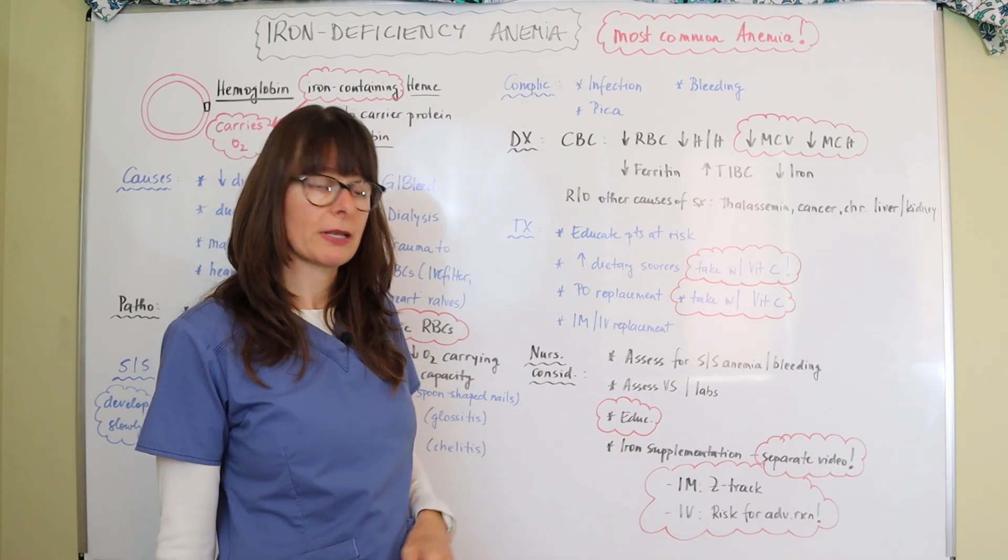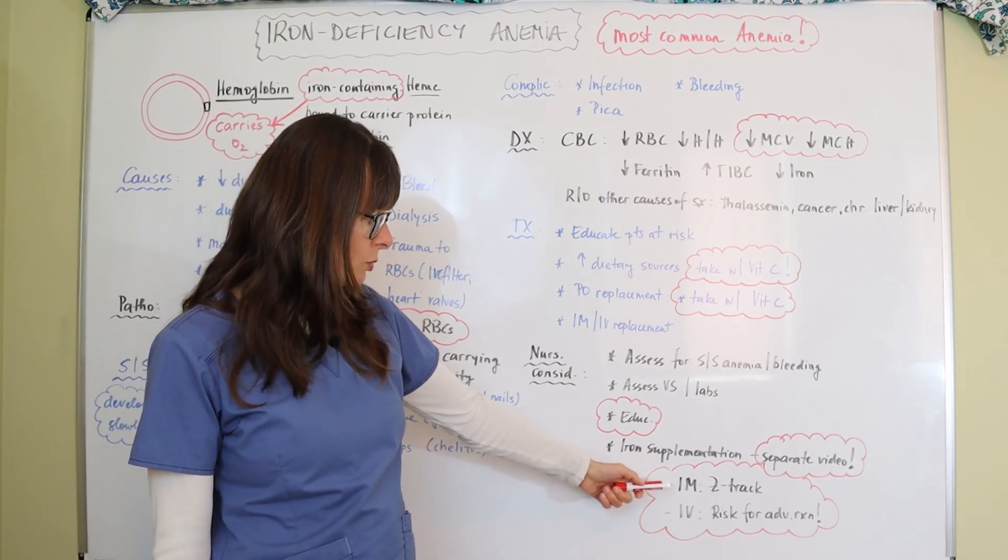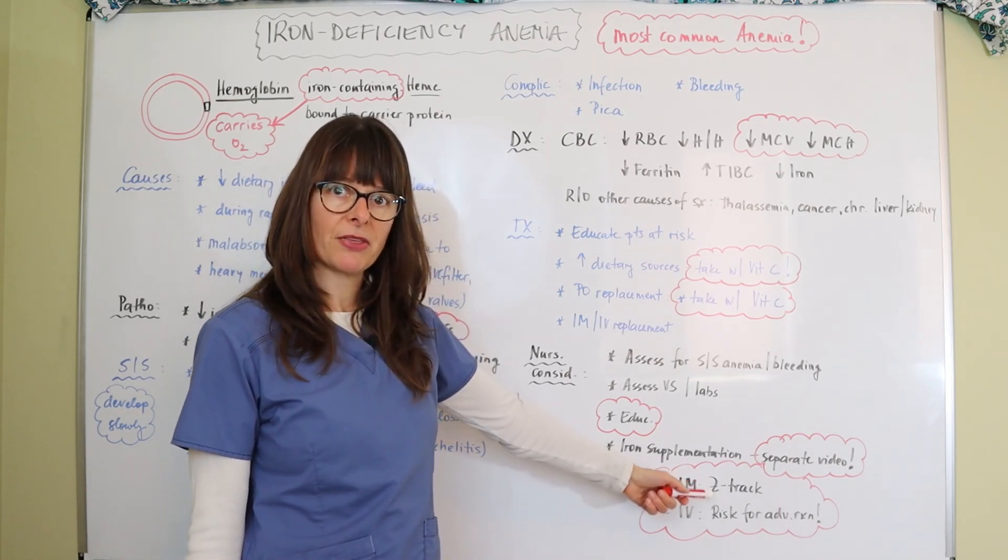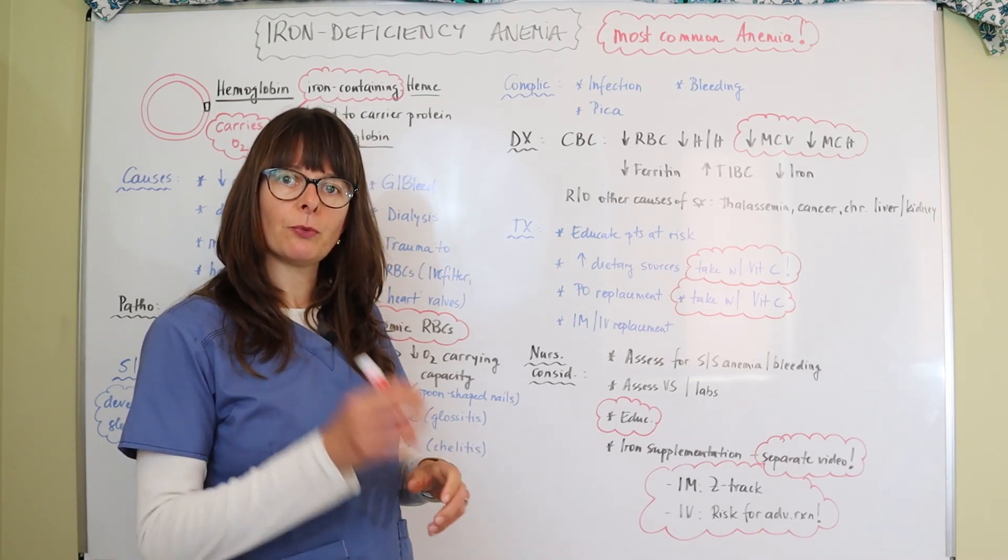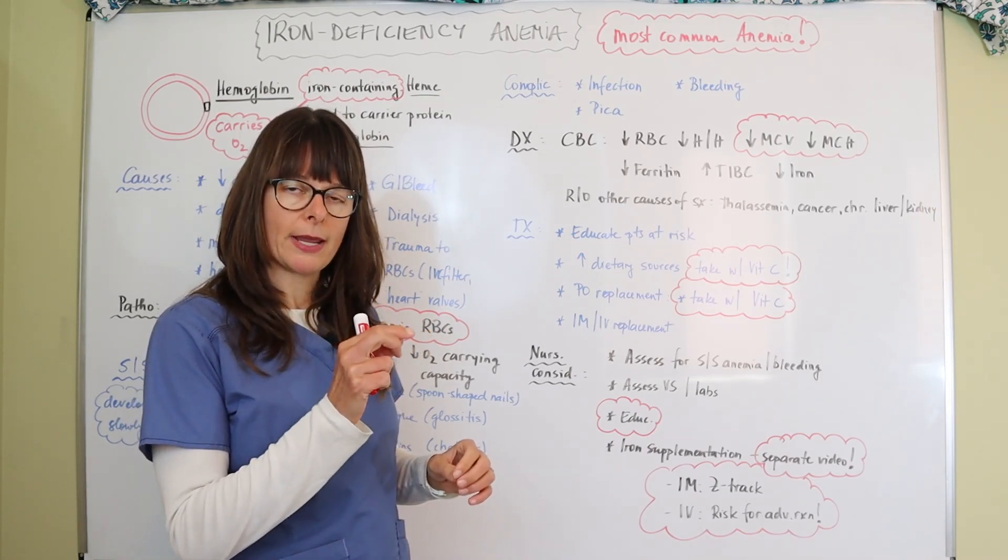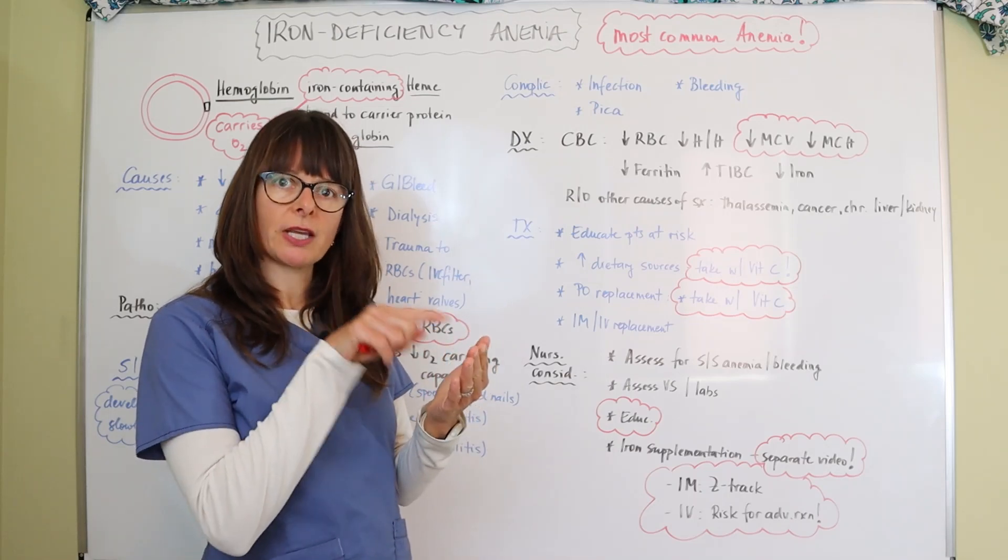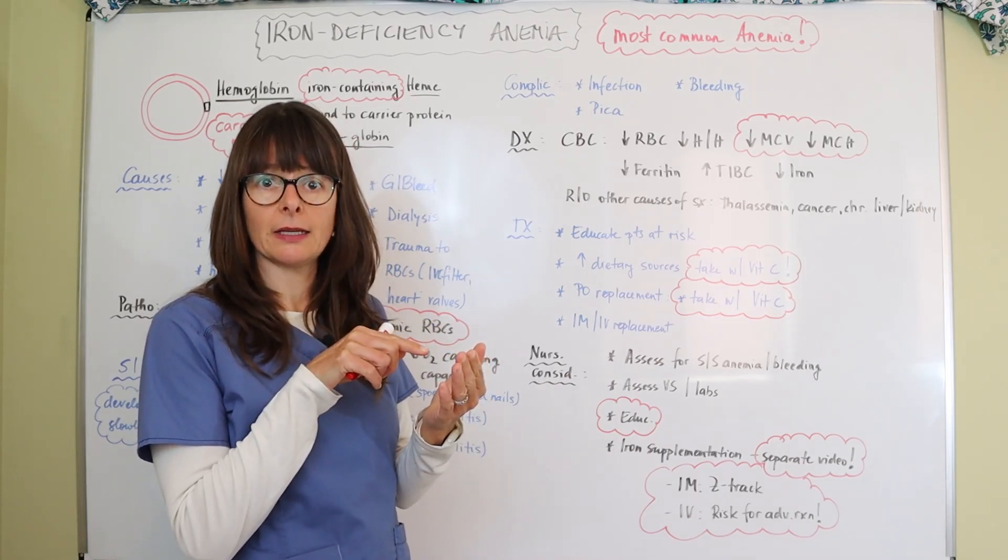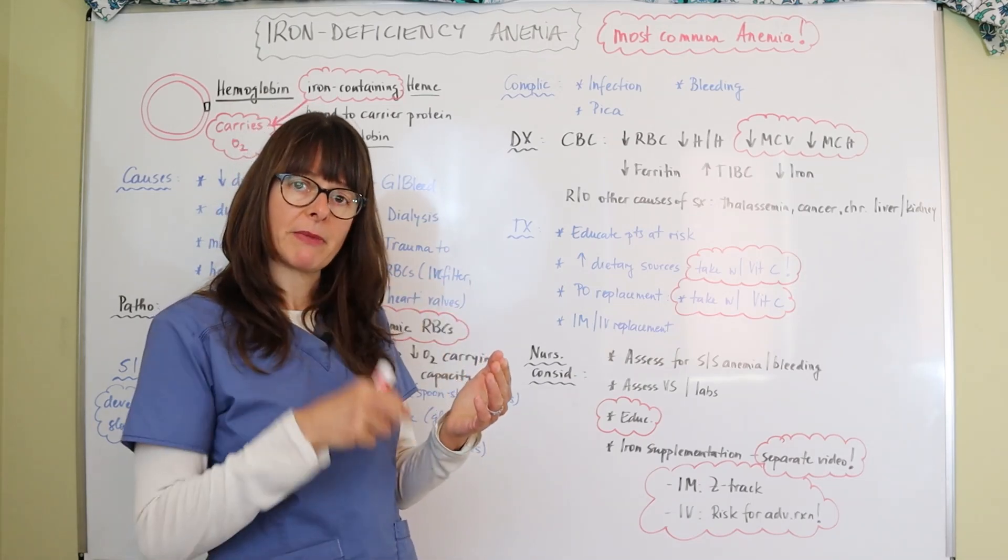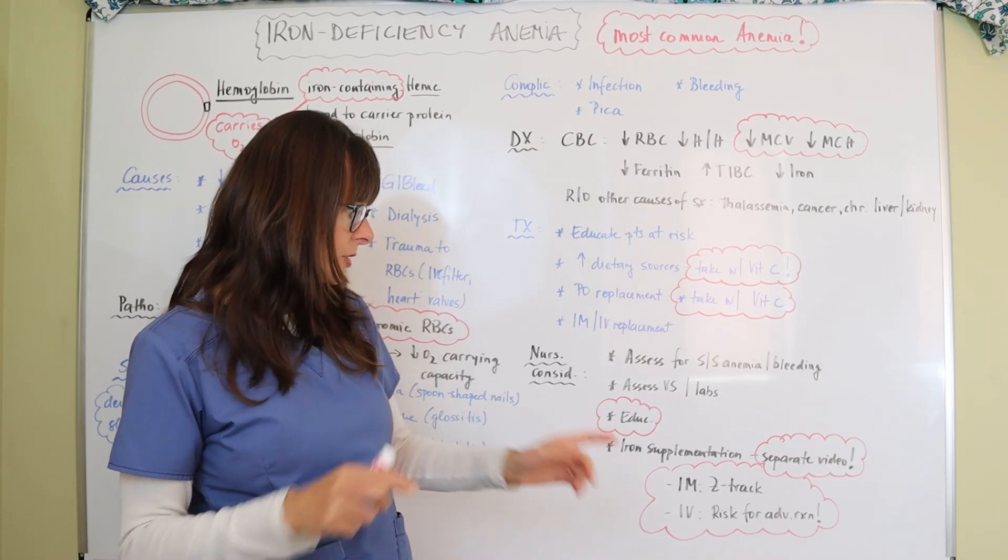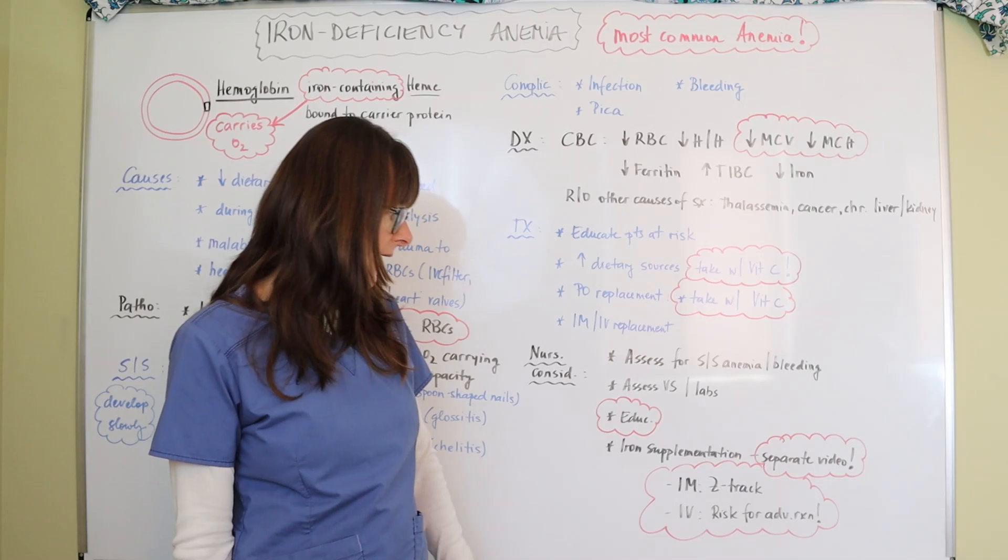When it comes to IM injections we want to use the Z-track method, and that is mostly because iron is actually a black fluid and if we give that in a regular way without the Z-track moving the skin over then it actually can cause some skin staining over time and then eventually it can look like a tattoo as you pull the needle out and a little bit of the medicine comes with it, so the Z-track method is always recommended there.